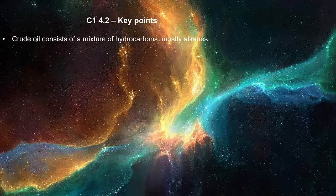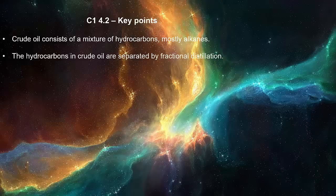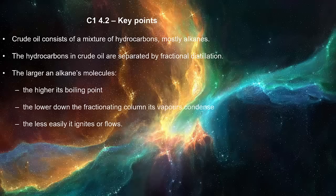Crude oil consists of a mixture of hydrocarbons, mostly alkanes. The hydrocarbons in crude oil are separated by fractional distillation. The larger the alkane molecule, the higher its boiling point, the lower down the fractionating column its vapors condense, and the less easily it ignites or flows.